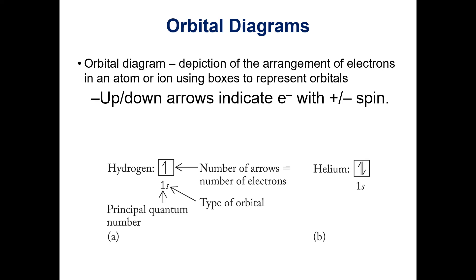When we start writing orbital diagrams, we depict the arrangement of electrons by drawing boxes to represent the orbitals, and then we put arrows to represent the electrons. If we only have one electron, for example in hydrogen, we draw our box and just have one electron to put in it.